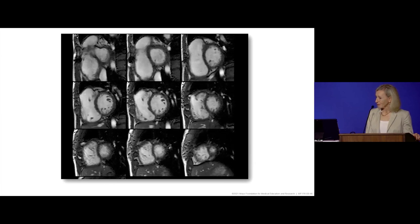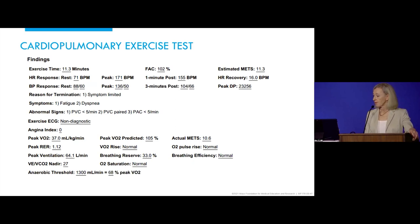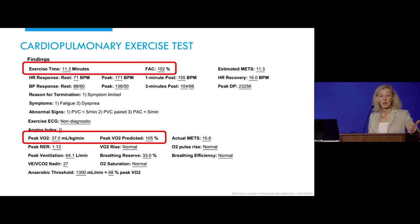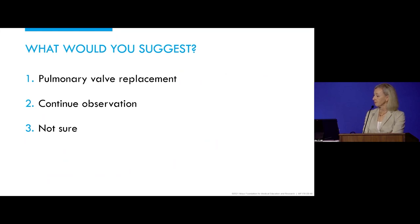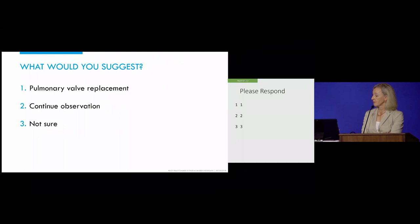The question is, what do we do? We exercised her — she was, as I said, asymptomatic and not completely convinced she needed anything done. Not only was she asymptomatic, but authentically asymptomatic: she exercised over 100% of predicted for both time and peak VO2. So what would you suggest for this patient? Pulmonary valve replacement, continued observation, or not sure?